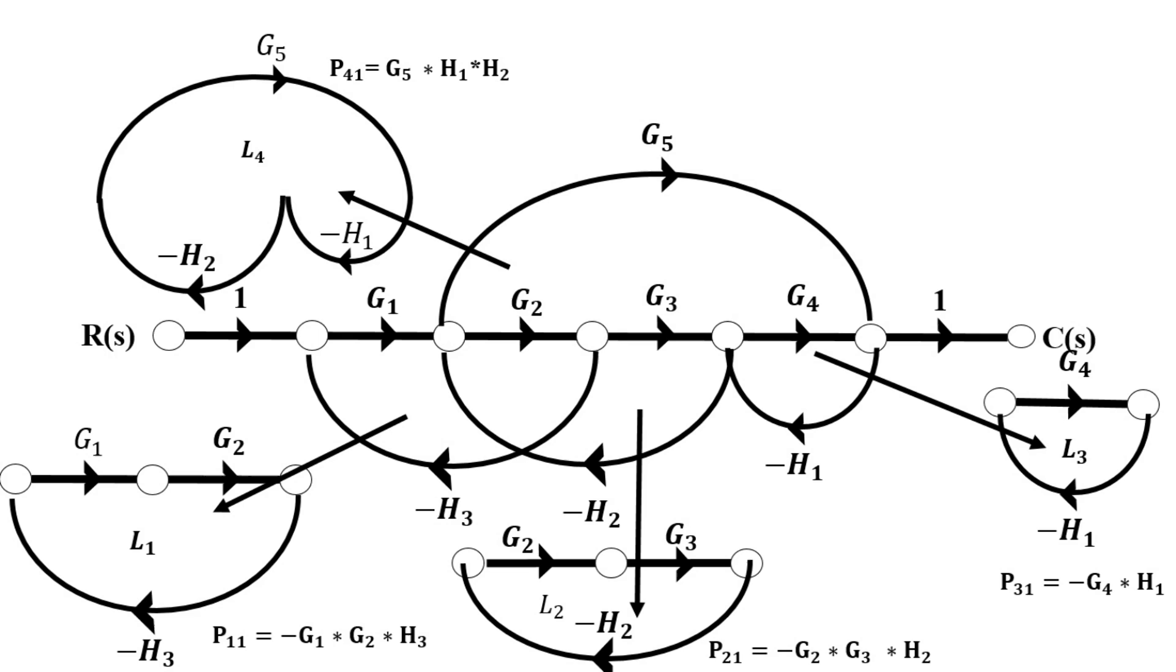Here this numbering system is interesting. You will notice the one is everywhere. So one shows us that these are single loops. And the first digit—1, 2, 3, and 4—shows that this is the first loop, second loop, third loop, and fourth loop.